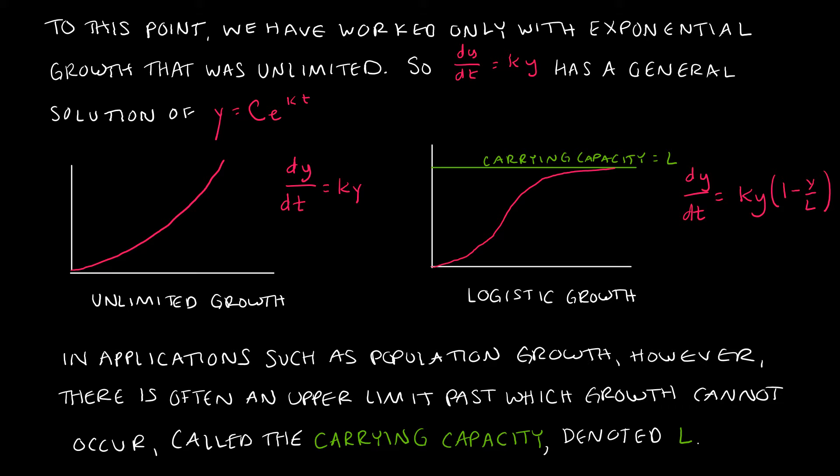You can see the difference in the two pictures: unlimited exponential growth versus logistic growth. Logistic growth increases originally like our unlimited growth model, then it starts to level out. It doesn't stop growing — it continues to maintain that upper level just below the carrying capacity L. So that is an asymptote.